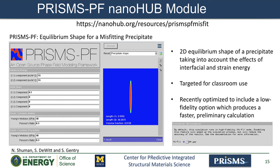Very briefly, I would like to talk about a NanoHub application based on PRISMS-PF. This application calculates the 2D equilibrium shape of a precipitate taking into account the effects of anisotropy in interfacial and strain energies. It is targeted for classroom use, so that students can understand the effect of each parameter by setting different combinations of values. It was recently optimized to include a low-fidelity option, which produces a faster preliminary calculation.